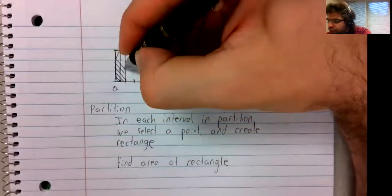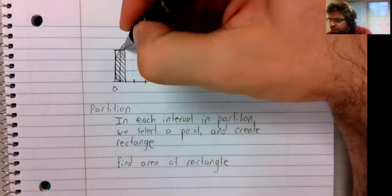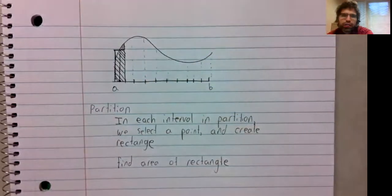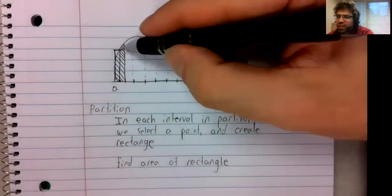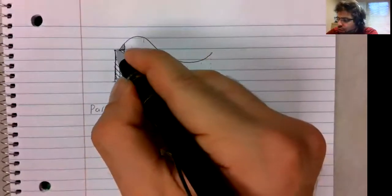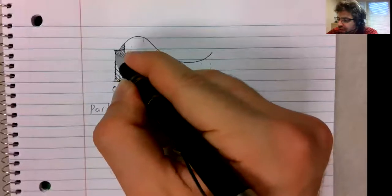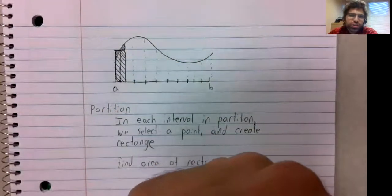is the area under the curve, is the area of this area. So we're missing some area. We're also gaining some area we don't want, though.